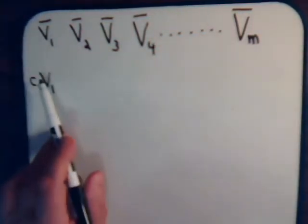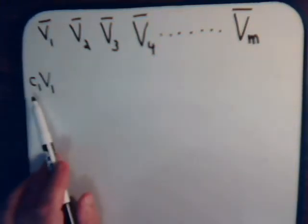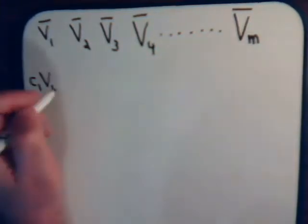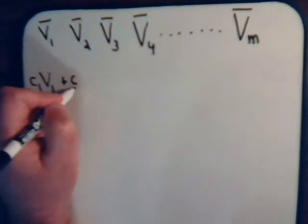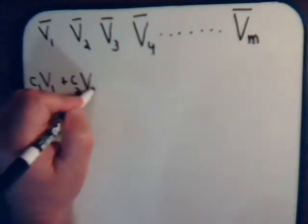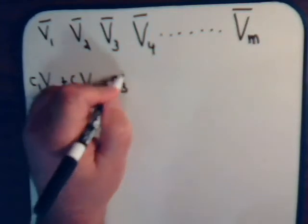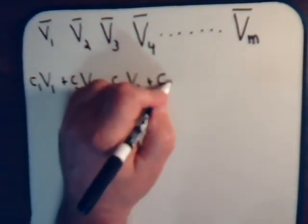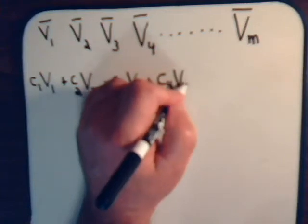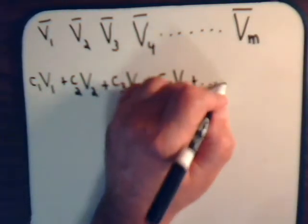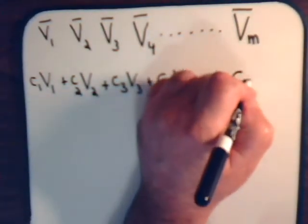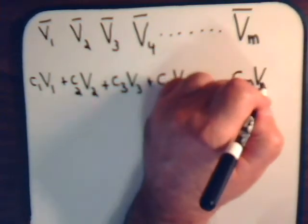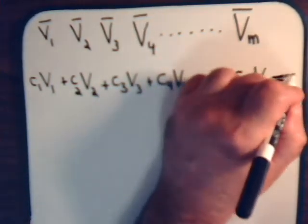I'm not going to draw the bars on the vectors anymore. We have a constant times the first vector, plus another constant times the second vector, like this. This can equal zero.